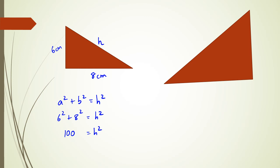The most common mistake people make is writing h equals 100 — it's really important to remember that h squared equals 100, not h. That means h is actually the square root of 100, and the square root of 100 is 10. So the hypotenuse in this case is 10 centimeters.